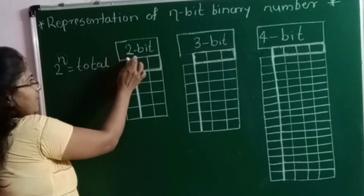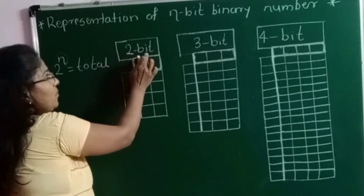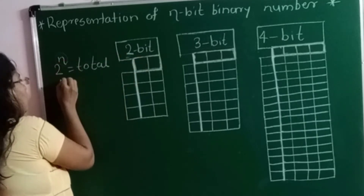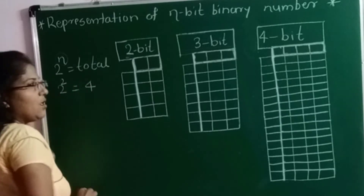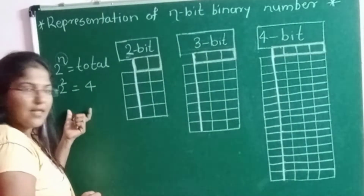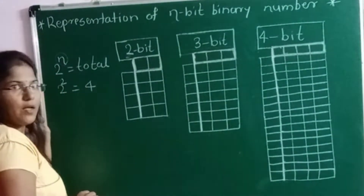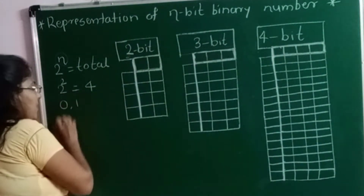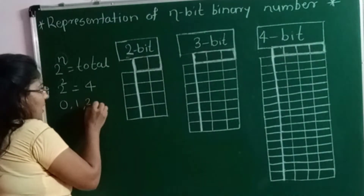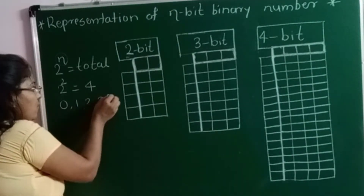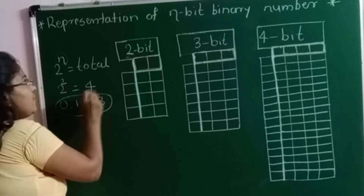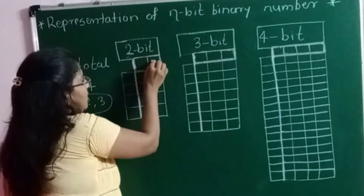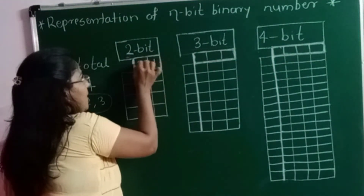Looking at the first table — 2-bit. The value of n is 2, so 2 raised to 2 equals 4. Total 4 values I can represent using 2-bits. The starting value is 0, then 1, 2, and 3. The weighted values for the binary number system are 1 and 2.